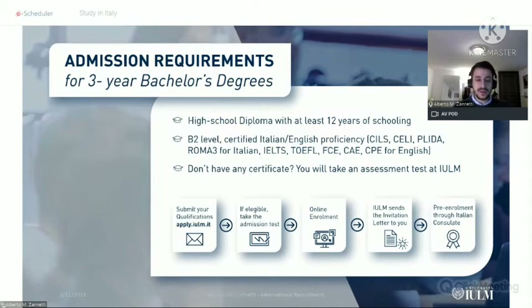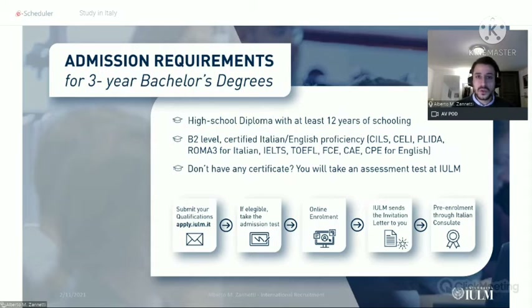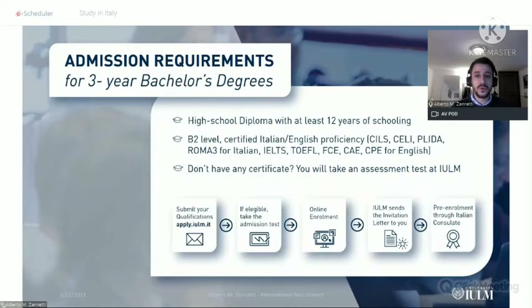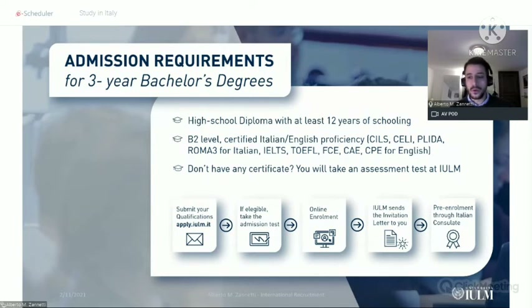The application process is very easy and smooth — it takes no longer than 15 minutes to apply. You just need to have your documents ready in scan copy and submit your qualifications to apply.iulm.it, our official application platform. If you are eligible, you will take a computer-based admission test that can be done from distance. If you pass the test, you complete online enrollment on the university website. After that, IULM sends you an invitation letter, which you use to go through the bureaucracy at the Italian consulate or embassy in your area.